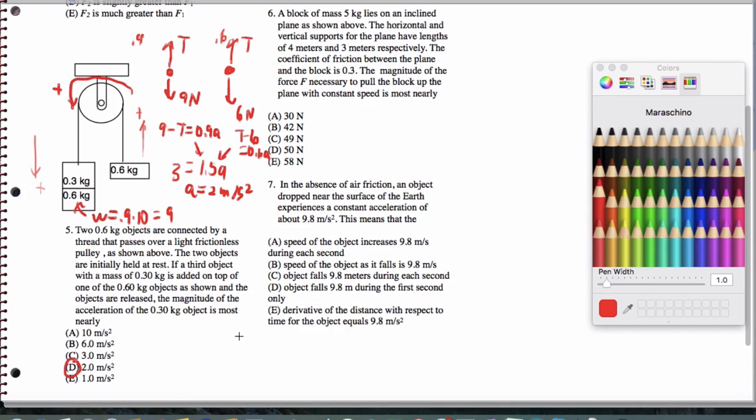By the way, if you wanted to go ahead and get the tension, then you go back and substitute. So to get the tension, I would say, let's also get t. Well, I know that t minus 6 equals 0.6 times a. I got a is 2, so t minus 6 equals 1.2. That's going to be a tension of 7.2 newtons, coincidentally.